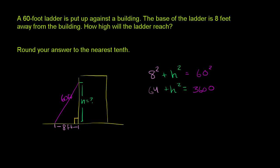Subtract 64 from both sides. We get h squared equals 3,536.